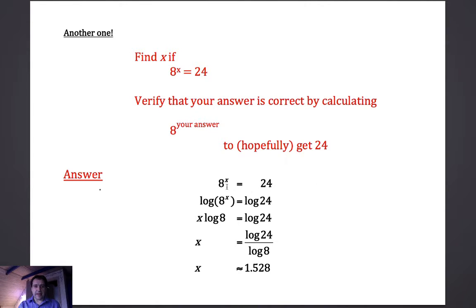So this is how we do it. 8 to the power of x equals 24. I can take logarithms of both sides. Remember an equation is like a balance, so as long as I do exactly the same thing to both sides then it will still balance. So in this case what I'm doing to both sides is taking logarithms. So the log of 8 to the power of x is equal to the log of 24.